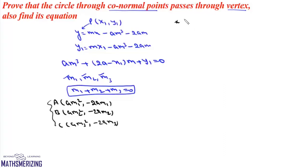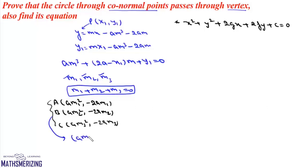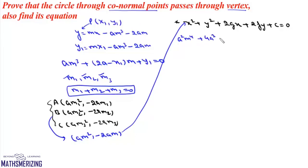Let the general equation of the circle passing through these three conormal points be x² + y² + 2gx + 2fy + c = 0. The general coordinates for these points are (am², −2am). Substituting x = am² and y = −2am into the circle equation gives: a²m⁴ + 4a²m² + 2gam² − 4fam + c = 0.